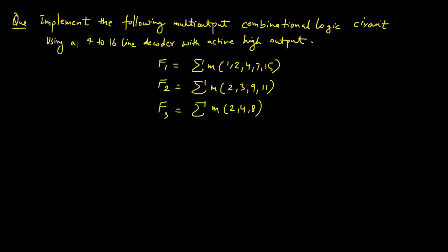The next question is to implement a multi-output combinational logic circuit using a 4-to-16 line decoder with active-high outputs. The three Boolean expressions are: f1 = Σm(1,2,4,7,15), f2 = Σm(2,3,9,11), and f3 = Σm(2,4,8).